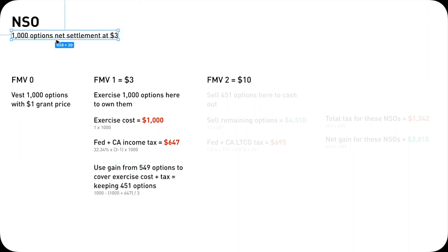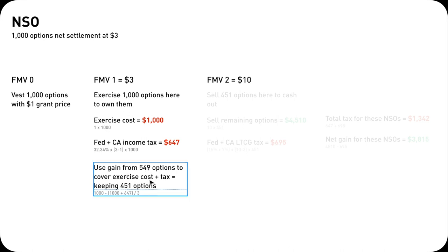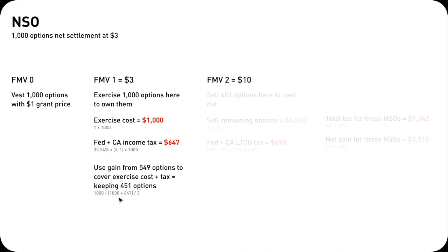Since we're doing net settlement, that means we're not paying anything out of pocket. Where's the money coming from? Since you're exercising your 1,000 options at a $3 fair market value, there's a gap between $3 and $1, so you generated some gains. You can use the gain to cover the exercise cost and the tax. You need to trade in 549 options to cover the exercise cost and tax, leaving you with 451 options — and you don't have to pay the $1,000 or the $647 tax.